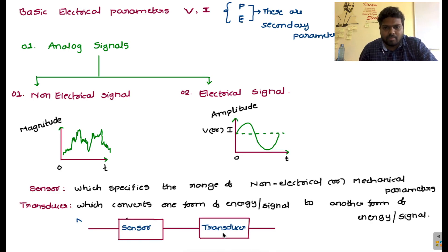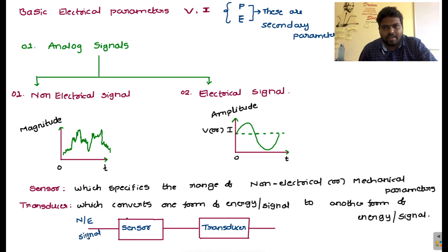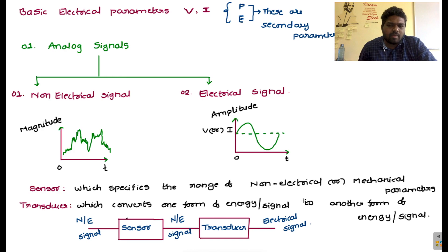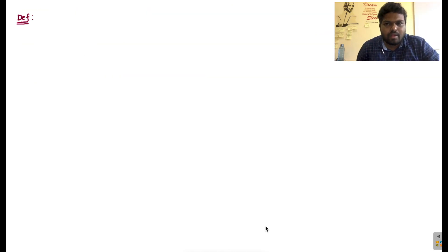To summarize: we provide a non-electrical signal from an infinite range, the sensor narrows it to a specified range and outputs a non-electrical signal, and then the transducer converts it to an electrical signal. So a sensor performs non-electrical to non-electrical signal conversion within a specified range, while a transducer performs non-electrical to electrical signal conversion. The sensor decides the specified range, and the conversion is done by the transducer.